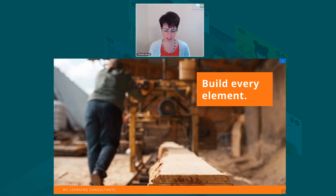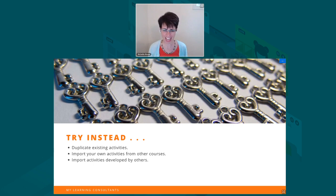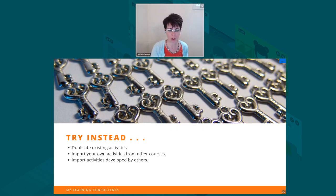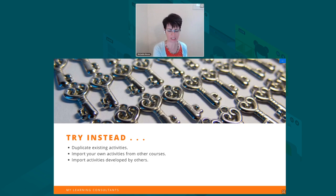You can also use templates to get around the idea of building individual activities. Sometimes people are building every element — so I need a forum here, so I'm going to add an activity and add a forum. Instead, build one, duplicate it, copy it, and repeat it throughout the course, using the same settings and then just tweaking what you need to adjust. Import your own activities from other courses, or if you know somebody else who's done it, import theirs. That's the way I've worked with a lot of people to learn how to build workshops and lessons — we very rarely start with a blank lesson or a blank workshop. We say, let's start with one that works and then modify it.